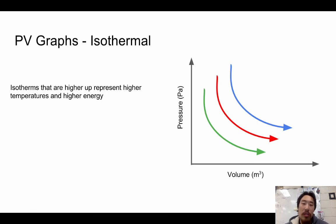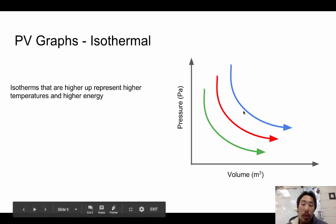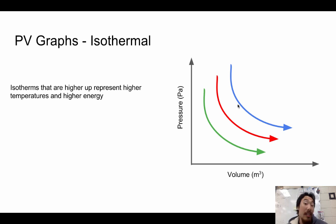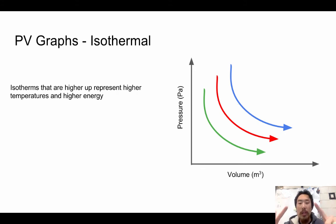Here we have three different gases showing three different isothermal lines. The blue line is furthest to the right, and the green line is further to the left. Isotherms that are higher up represent higher temperature and higher energy, because energy is found by multiplying pressure and volume. Because the product of pressure and volume will result in a bigger number for higher isotherms, it results in a bigger energy product.